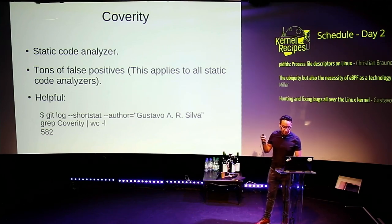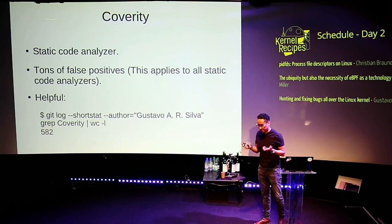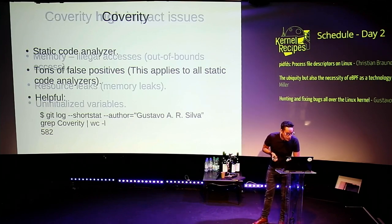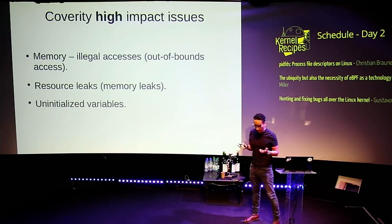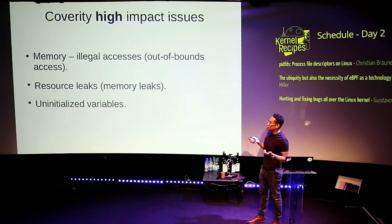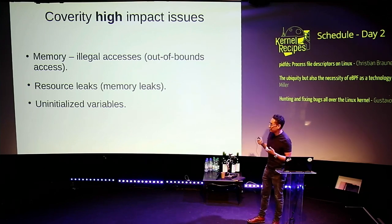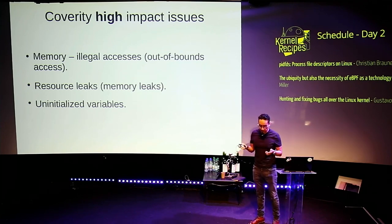The false positives are a problem because it demands a lot of time trying to find if I'm dealing with a false positive or an actual bug. The three categories of high-impact issues that Coverity reports are: illegal and out-of-bounds accesses, resource leaks, and uninitialized variables — all very common problems in the kernel.